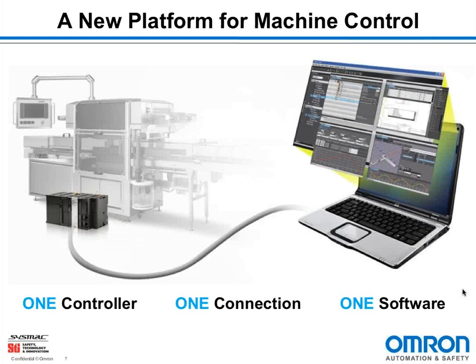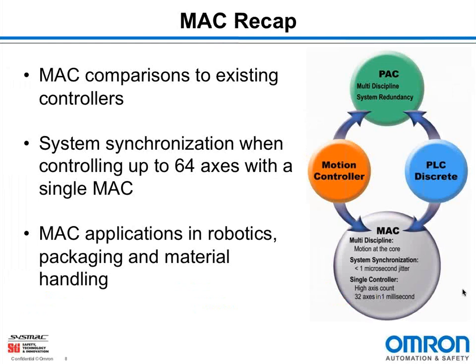So step by step we have integrated more and more things into the controller package. We just keep needing more functionality, more power. The increased controller capability leads to the need for new technologies. OMRON has come up with this new platform — one controller with one connection into one software — so you can coordinate and synchronize all aspects of machine control, integrating robotics, packaging, material handling, and up to 64 axes with a single MAC.